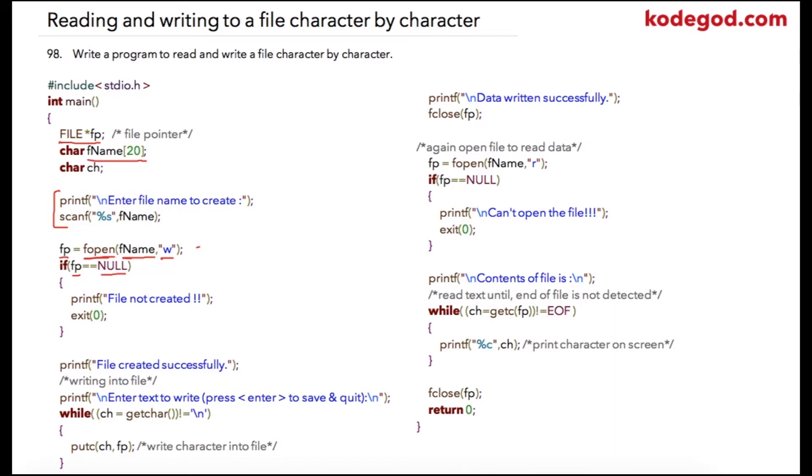But if there are issues like no disk space or any other reason then fopen will fail and in that case fopen will return a null pointer. So if this condition is true then that will mean that file did not exist and also the compiler was not able to create a new file. So we can simply print file not created and we can exit the program.